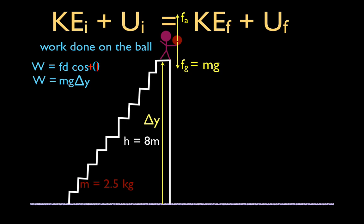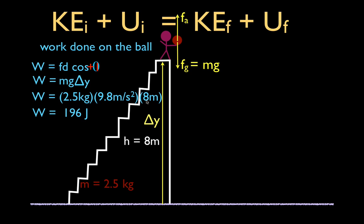You may notice this equation looks a lot like the equation for potential energy — because when you have an external force raising an object up, the amount of work you do is equal to the change in potential energy. We could have also asked what is the change in the potential energy of the ball. Now we can plug our values in: mass of the ball is 2.5 kilograms, acceleration due to gravity is 9.8 m/s², and the change in height is 8 meters. The work done on the ball equals 196 joules.